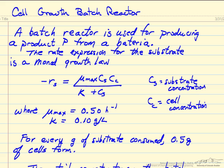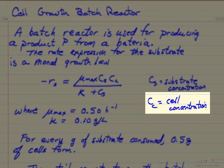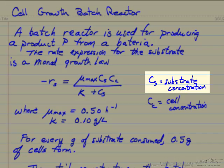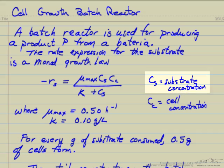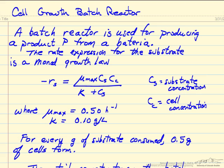In this example we'll look at cell growth in a batch reactor, and we're using in this case a bacteria to produce a product P. The rate expression in this case depends on the concentration of cells, C sub C, and the concentration of substrate, the nutrients that are used for the growth of the cell.